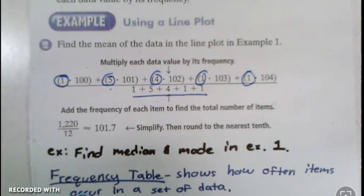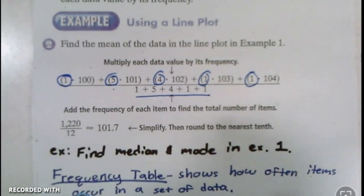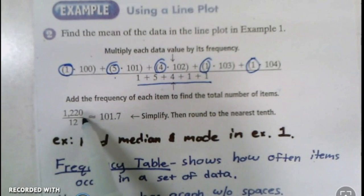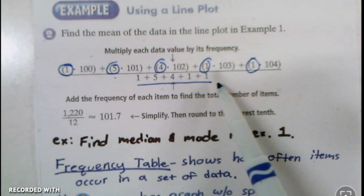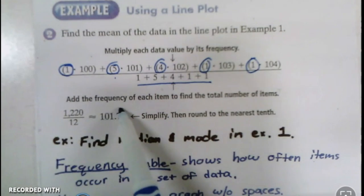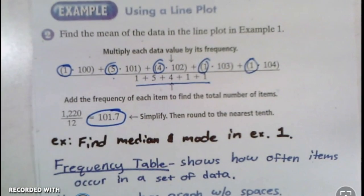Then we'll divide them. So for the cat, we can see that when they add them all up, they got 1220. They divided it by the 12 that they got when they added those numbers, and they ended up with a mean of 101.7.